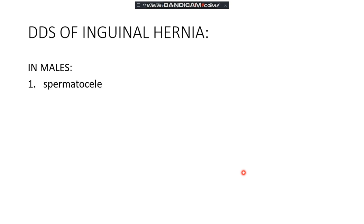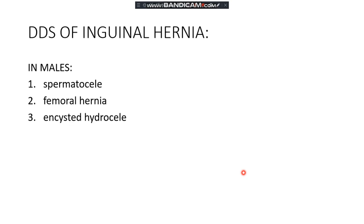The differentials of inguinal hernia in males include spermatocele, femoral hernia — which is very common in females though it also occurs in males — and encysted hydrocele and vaginal hydrocele. These conditions are the main differentials of inguinal hernia that can be confused in clinical practice.